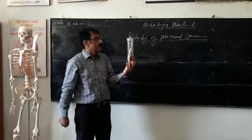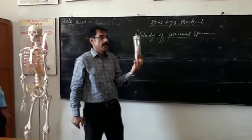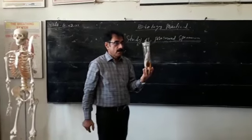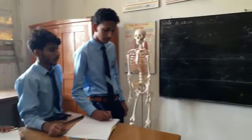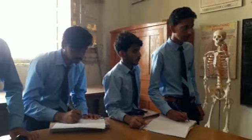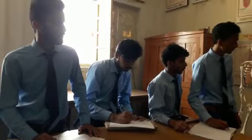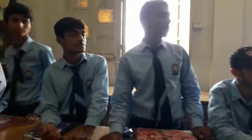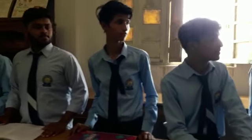This is the specimen of the squalidone, preserved in formaldehyde or formalin. And this is the preserved specimen of the frog. The scientific name of the frog is Ramathirin. Now this is the preserved specimen.